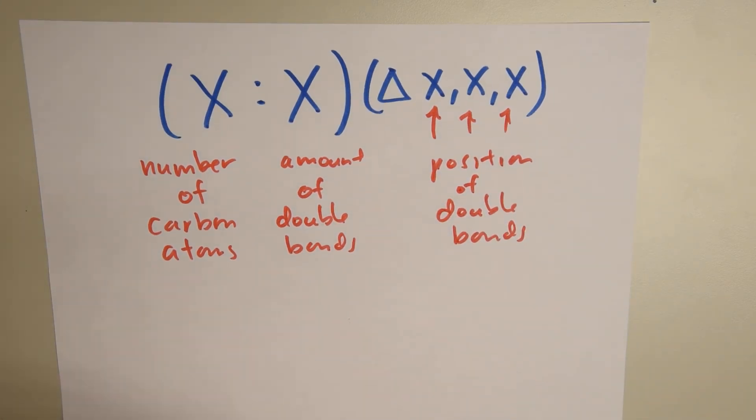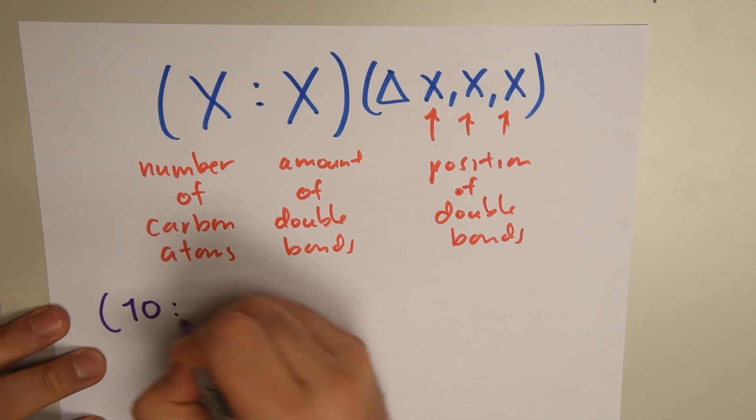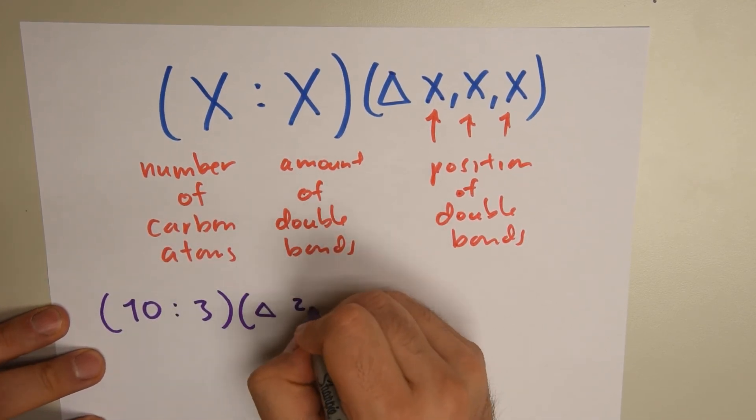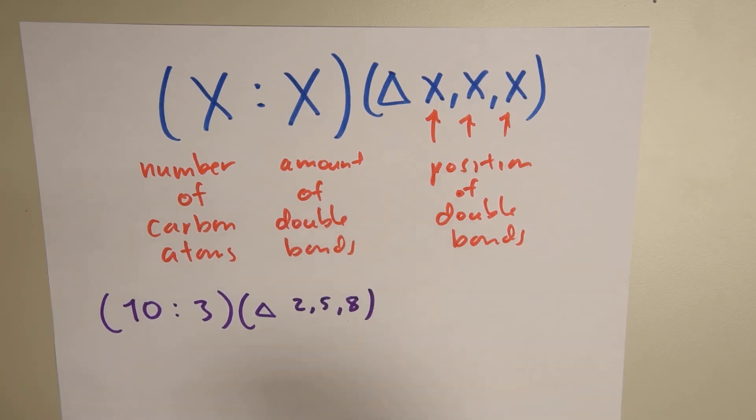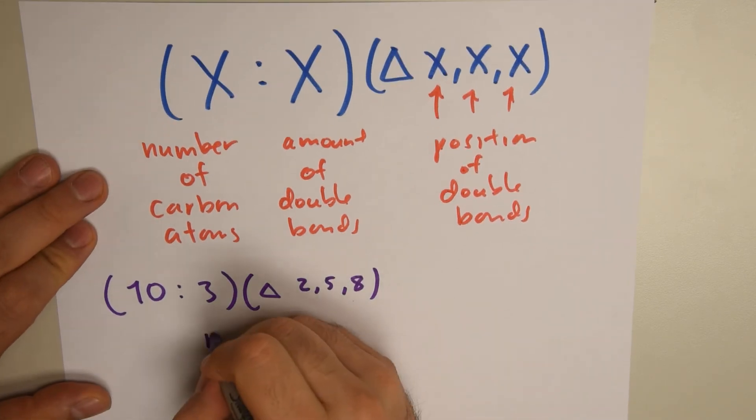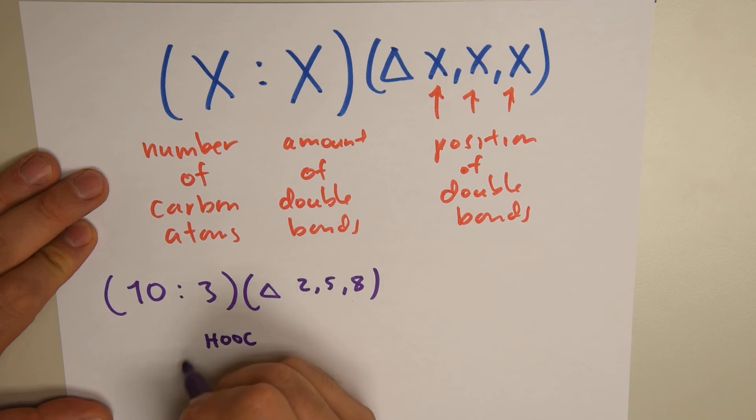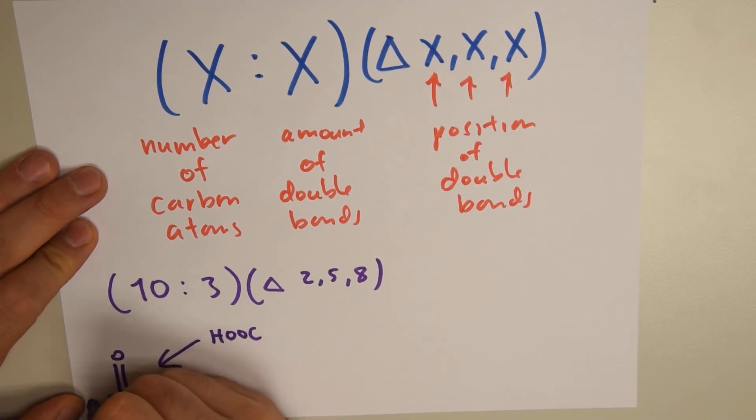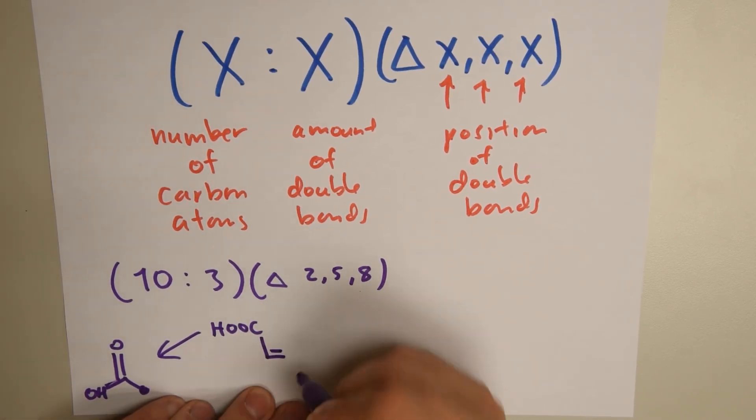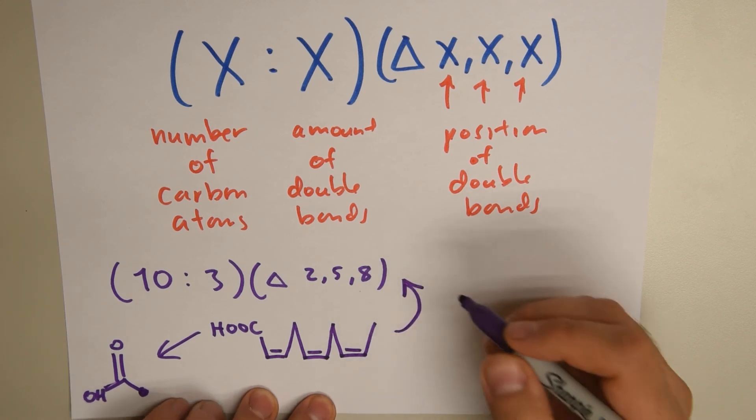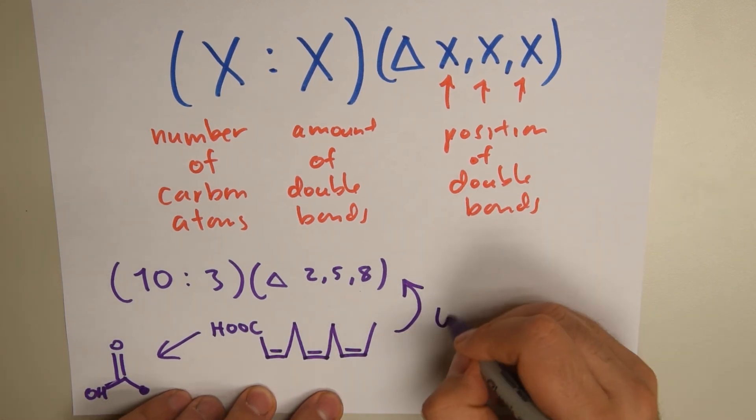A little reverse example. I'm going to write a random notation: 10, 3, triangle, 2, 5, and then 8. So if I want to draw that, I start HOOC, which is the same as this, my carboxyl group. Then I'm going to draw 10, watching out for this: 1, 2. After 2, there's a double bond. 1, 2, 3, 4, 5. After 5, there's a double bond. 6, 7, 8. There's a double bond. 8, 9, 10. This is the same notation as this. What is my omega? Omega 2.